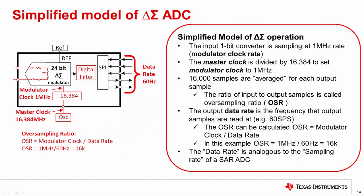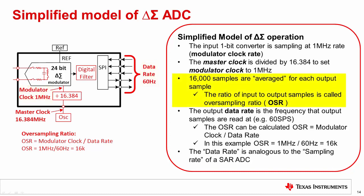Let's start by considering a very simplified model of a delta-sigma ADC. One key point is that the input circuit — called a modulator — samples at a faster rate than the output data rate. In this example, the modulator is sampling at 1 mega sample per second, derived from an external master clock of 16.384 MHz divided down to 1 MHz. The conversion results from the modulator are averaged and filtered by a digital filter. The output data rate is always lower than the modulator sampling rate — here it is only 60 Hz, so 16,000 input samples are averaged for each output word. The ratio of modulator rate to output data rate is called the oversampling ratio, or OSR — in this example, the OSR is 16,000.